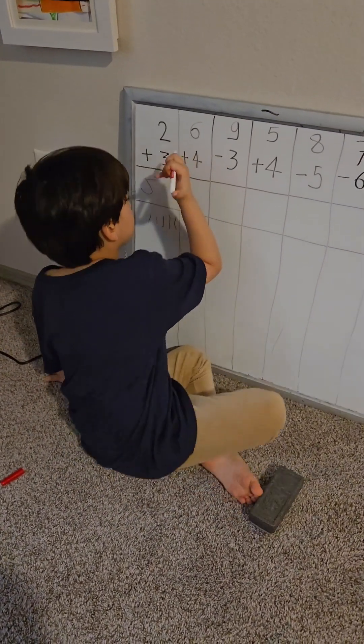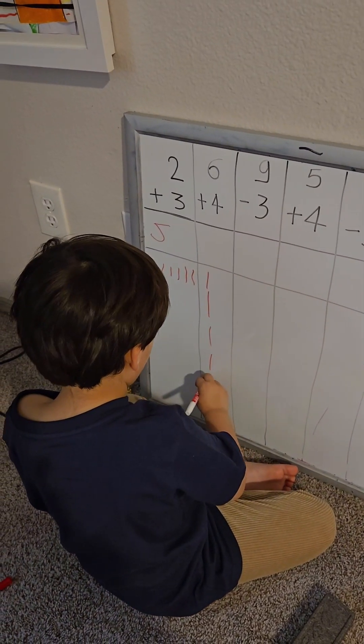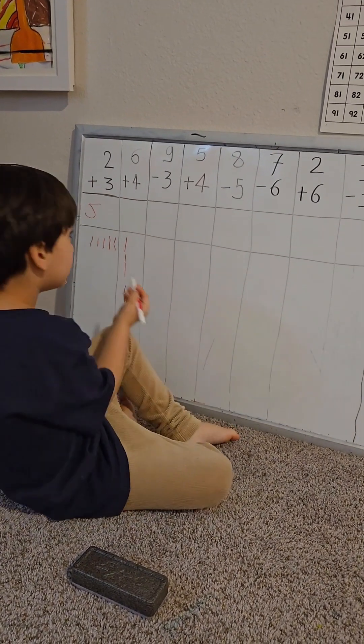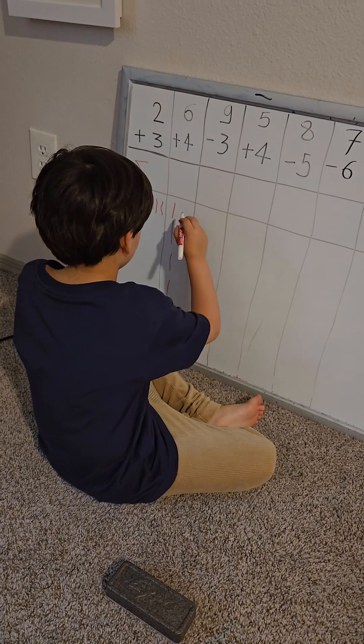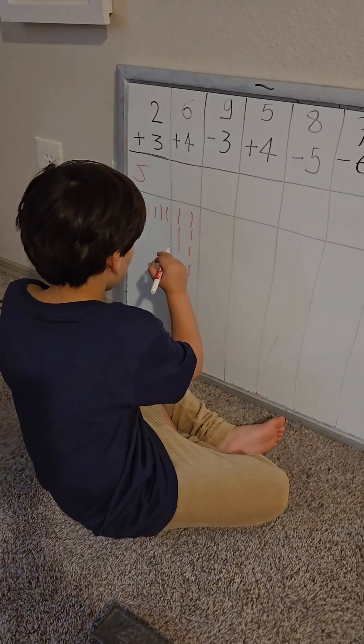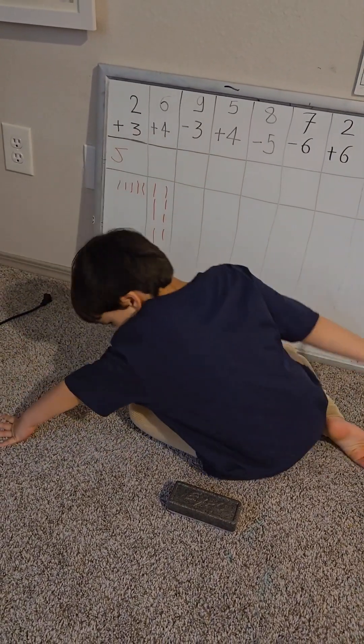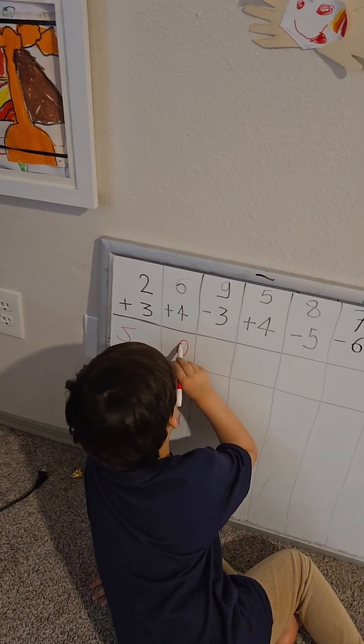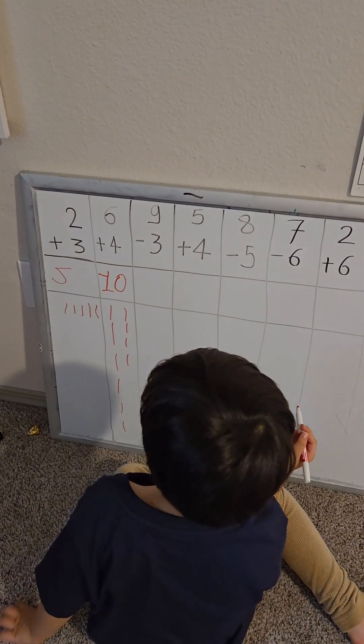Okay, the next one. It is 6 plus 4. 2, 3, 4, 5, 6. Okay, 6. Now. So you draw 6 lines. Now 4. Draw 4 lines. 1, 2, 3, 4. Now count together. 1, 2, 3, 4, 5, 6, 7, 8, 9, 10. Yes, answer is 10. So write the answer 10.